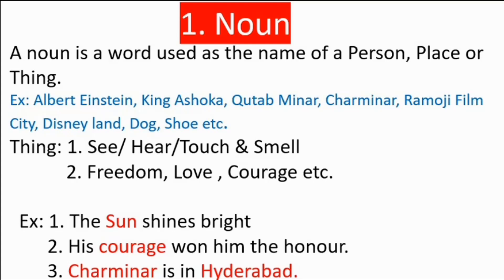Examples of noun: First — 'The sun shines bright.' Here, 'sun' is the noun. Second — 'His courage won him the honor.' Courage is the noun; though it is not a person or place, it is a thing — the second category of thing. Third — 'Charminar is in Hyderabad.' Charminar is a noun and Hyderabad is also a noun. In this sentence we find two nouns. Is that clear about noun?